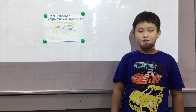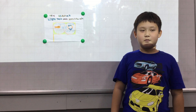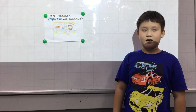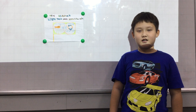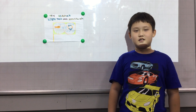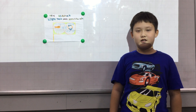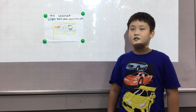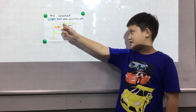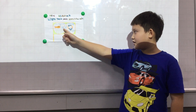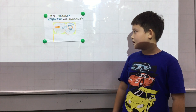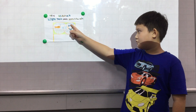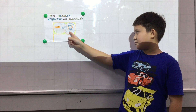The living things are animals, people, and plants. And the non-living things are objects and places. The living thing can move by itself and it can breathe, but the non-living thing cannot move by itself and it cannot breathe.